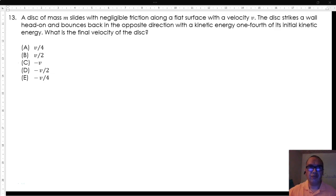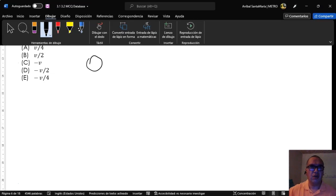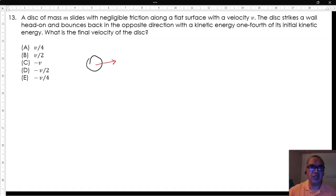13. A disk of mass M slides with negligible friction along a flat surface with a velocity V. The disk strikes a wall head-on and bounces back in the opposite direction with a kinetic energy one-fourth of its initial kinetic energy. What is the final velocity of the disk?